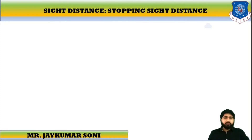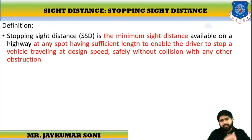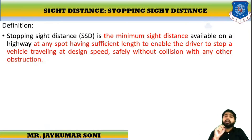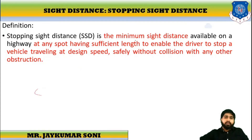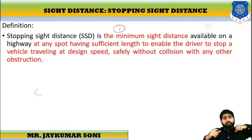What we have learned till date is sight distance — it is the actual distance visible from a driver's seating height to a certain object. Now we will learn about stopping sight distance. In sight distance, what we observed is that it is the actual distance. But in the case of stopping sight distance, it is the minimum sight distance available on the highway at any spot, which is of sufficient length to enable the driver to stop the vehicle travelling at the design speed safely without collision with any other obstruction.